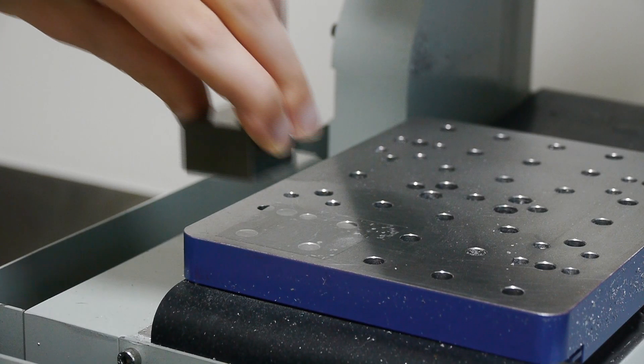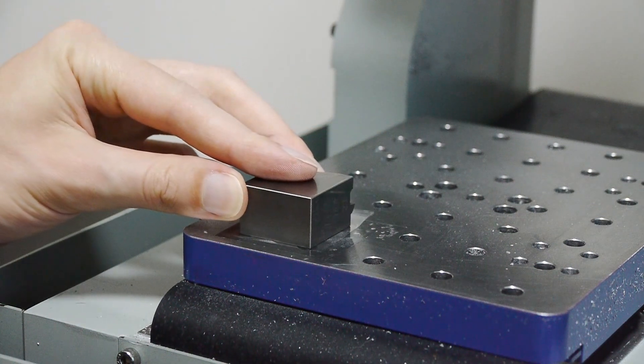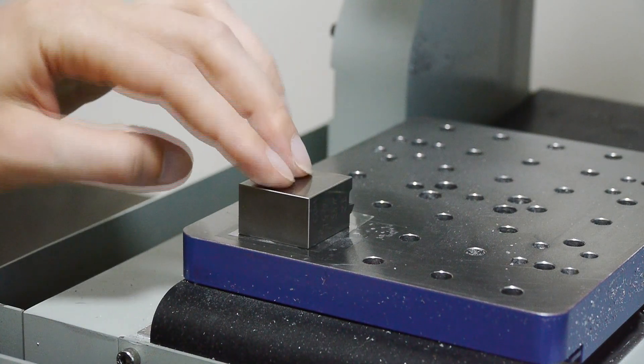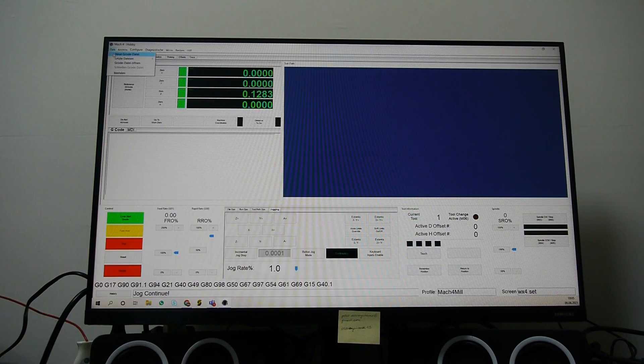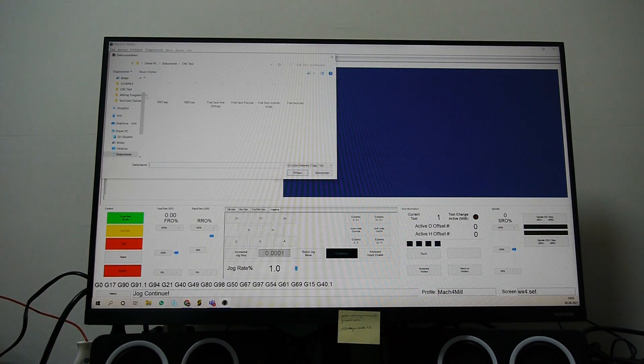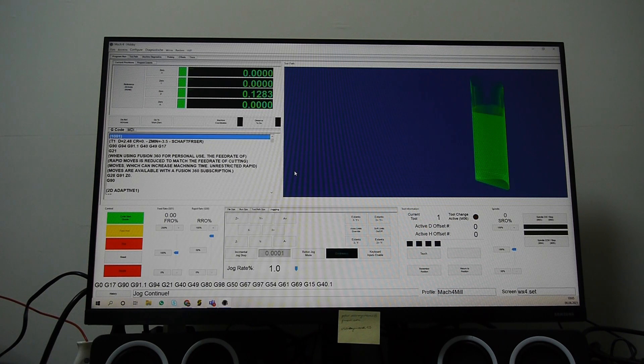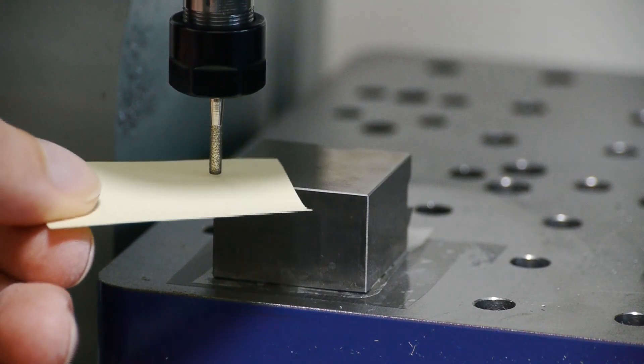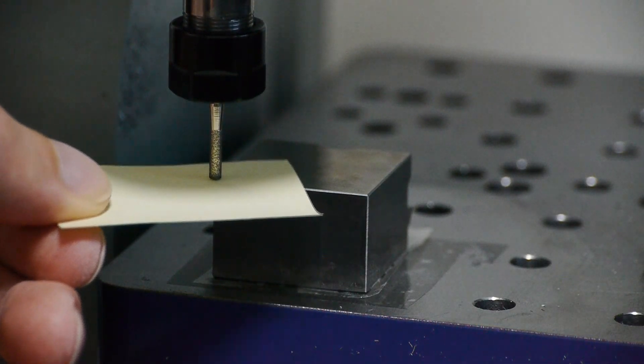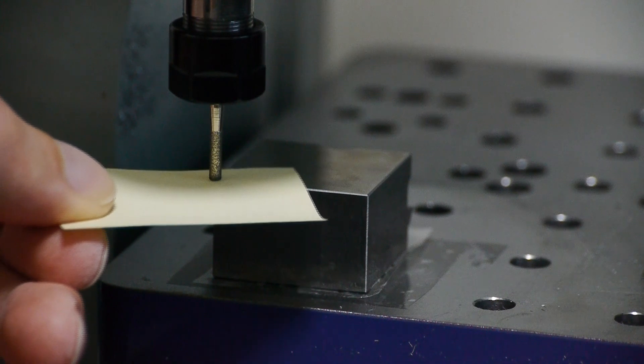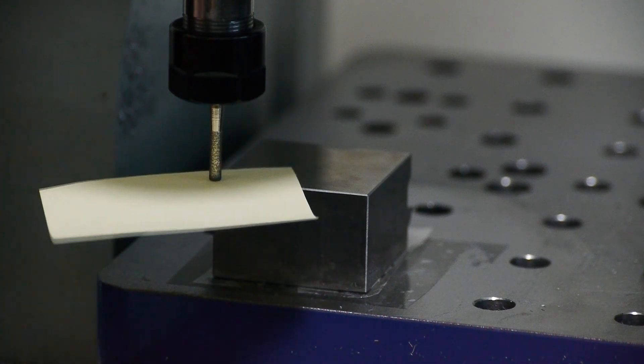Now it is time to set up the carbide block by using tape and superglue. The G-code is loaded into Mach 4 and the zero point is set. Now we are ready for the first test.